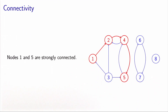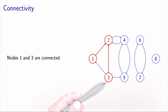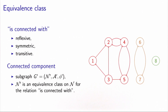We will talk about simple connectivity, or say that nodes are connected, if there exists a path connecting the two nodes — not necessarily a forward path. In this case, node one and three are connected because there exists a path, not necessarily forward, that connects them.